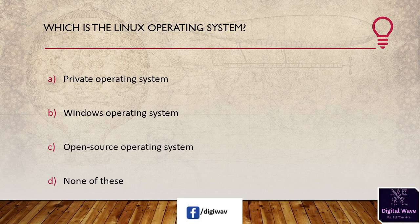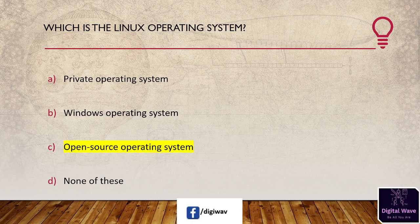Next question: which is the Linux operating system? Options: private operating system, Windows operating system, open source operating system, none of these. The right answer is open source operating system. The Linux operating system is an open source operating system made up of a kernel. It is a very safe operating system.